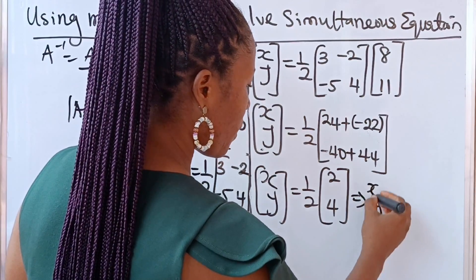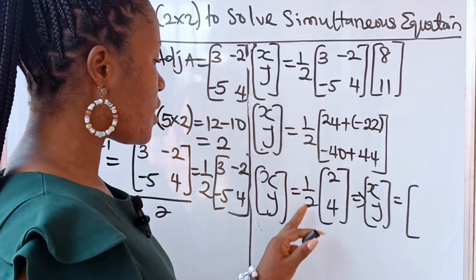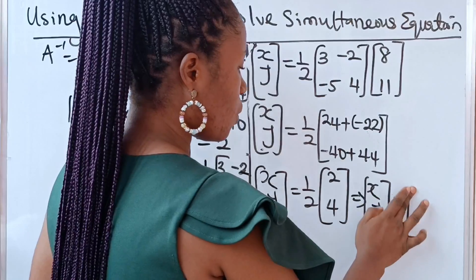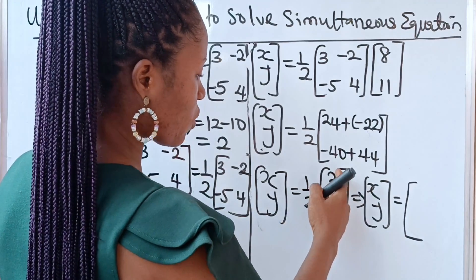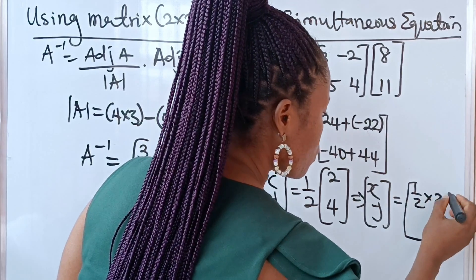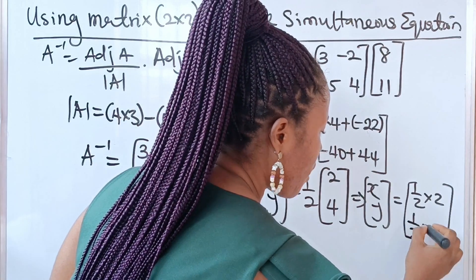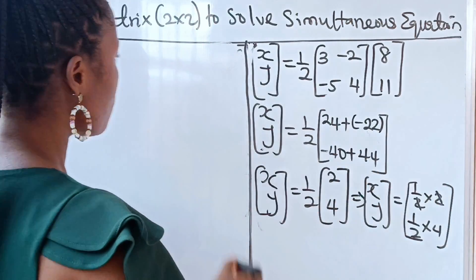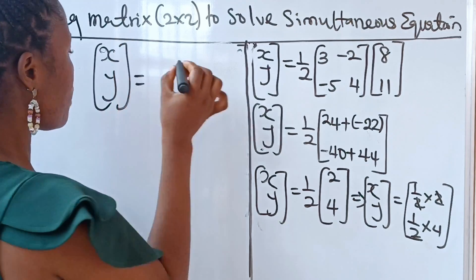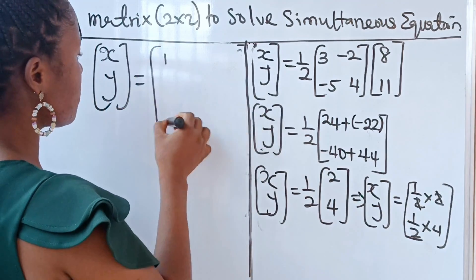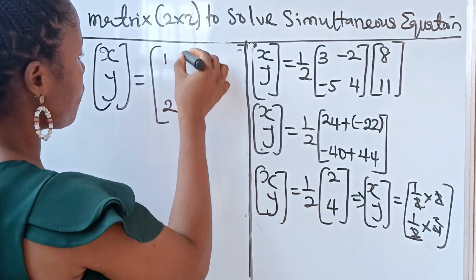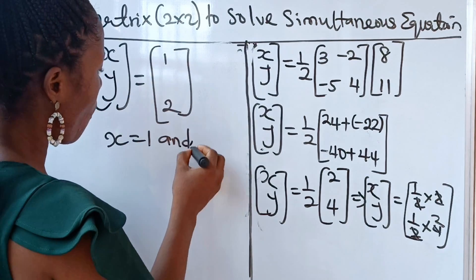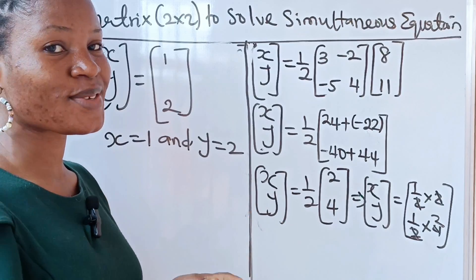Now (1/2) multiplies everything inside: (1/2) × 2 = 1, and (1/2) × 4 = 2. Therefore [x; y] = [1; 2], which means x = 1 and y = 2. Thank you so much for watching, and I wish to see you next time. Bye!